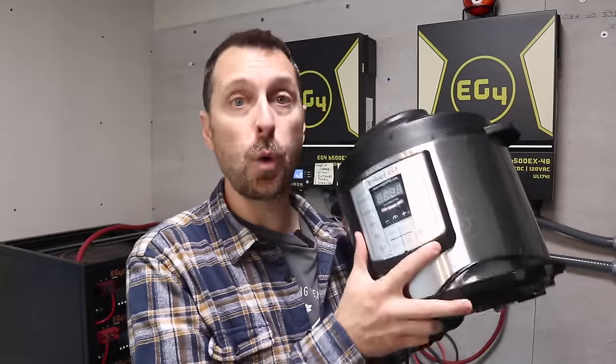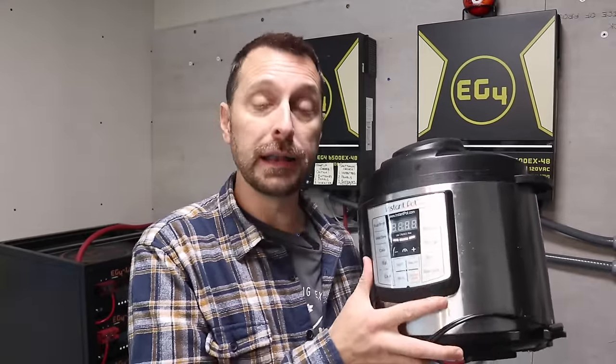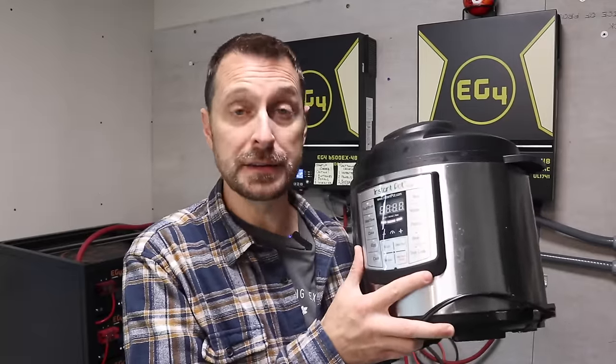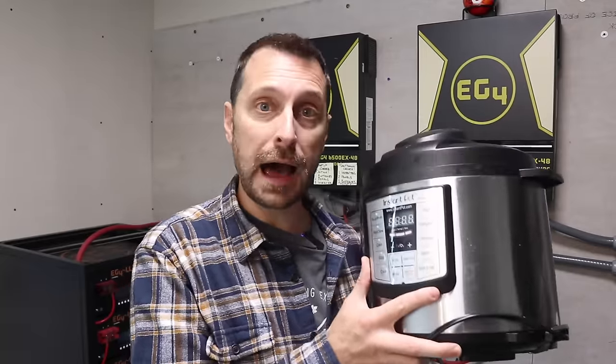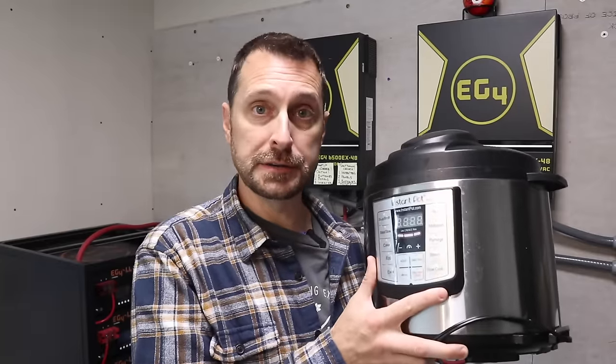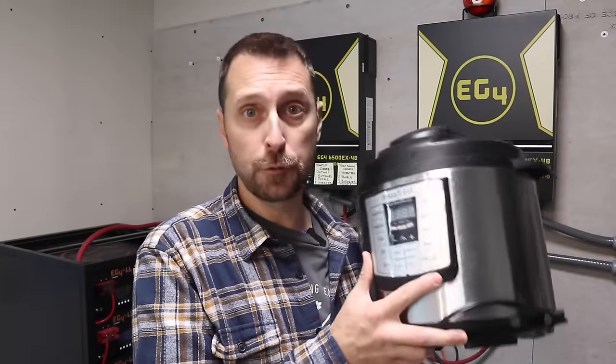So some of you who are new to solar are saying, well what does that mean? Here's a quick example. Say this Instapot draws 1,000 watts or 1 kilowatt while you are using it to cook soup or whatever, and you use it for one hour. That is one kilowatt hour used from the batteries. And remember we started with 46.